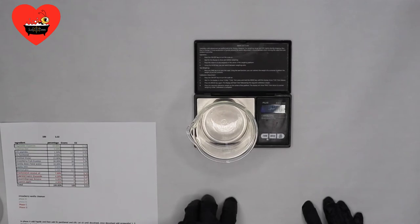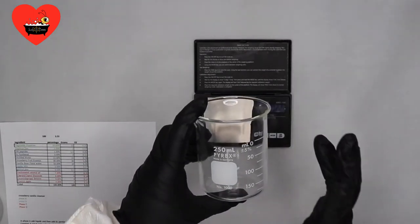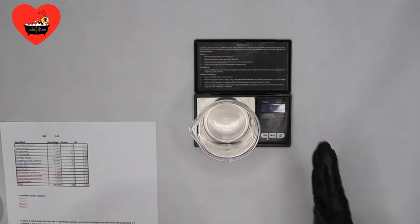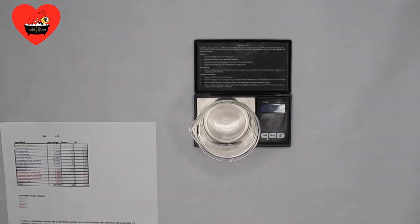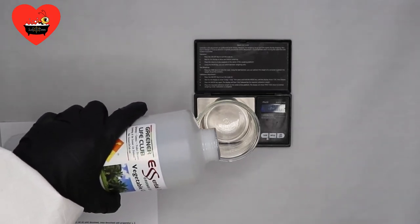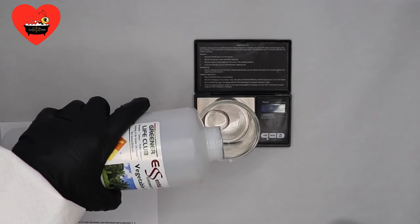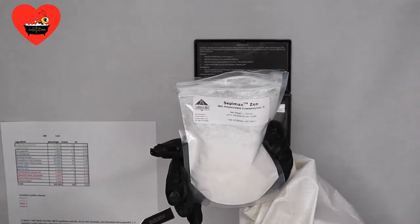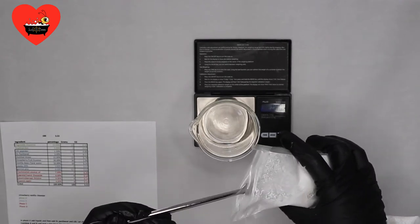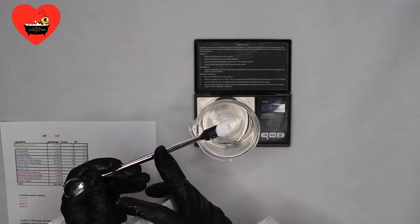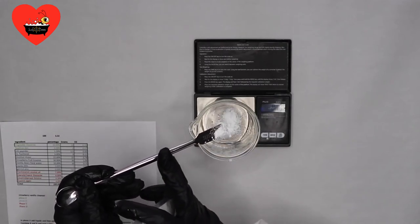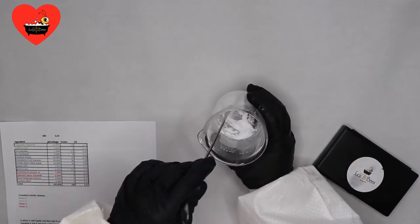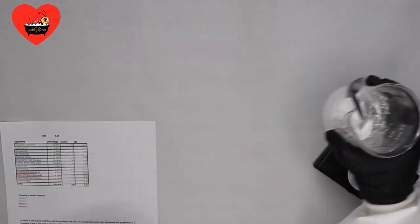So today I will be making a hundred gram batch and I will be using a 250 milliliter beaker for the whole formula. We will start with phase A, with 10 grams of vegetable glycerin. To the glycerin, I will be adding two grams of Septimax Zen. This is going to be our gelling agent and emulsifier. I'm going to mix this until it gets really gooey.